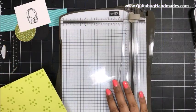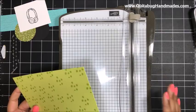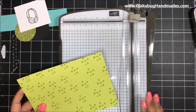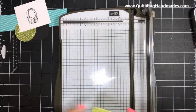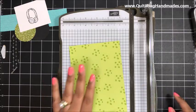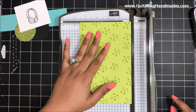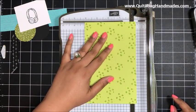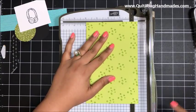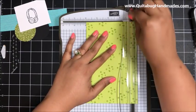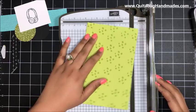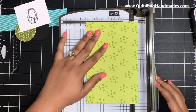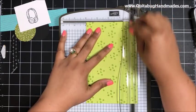I've got my Stampin' Up Paper trimmer here. I'm going to use this for all of my scoring, but you could also use the Simply Scored scoring board. With the short side of my cardstock at the top of my trimmer, I'm going to score the long side at half an inch, then rotate and score the opposite long side at half an inch as well.